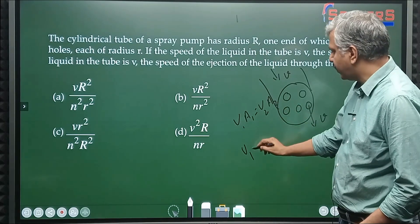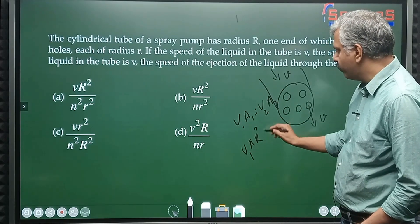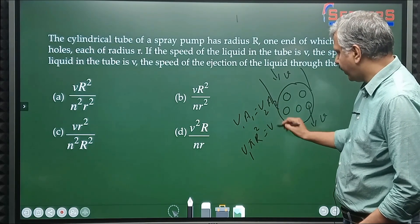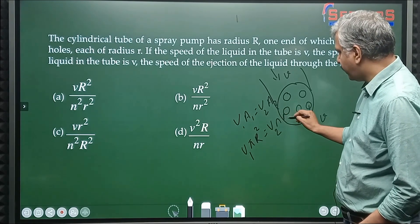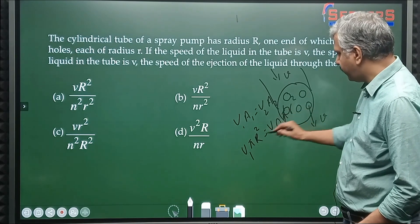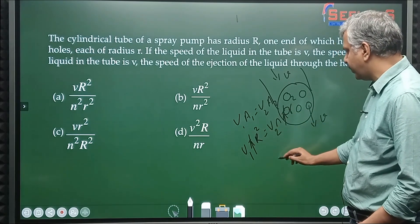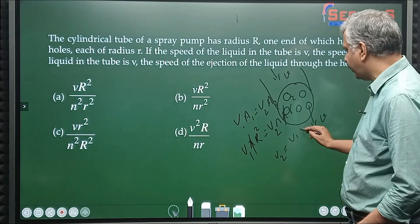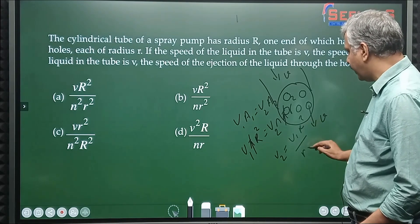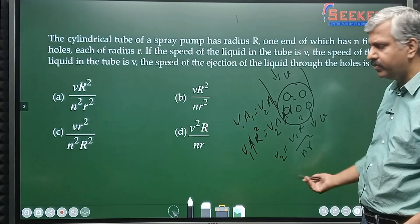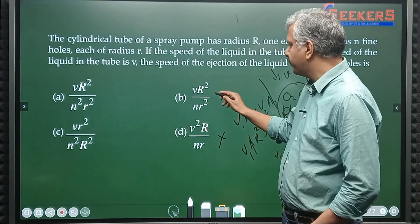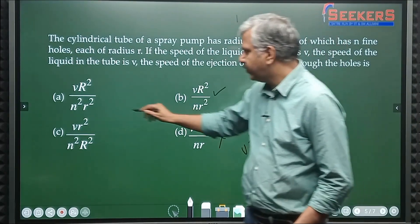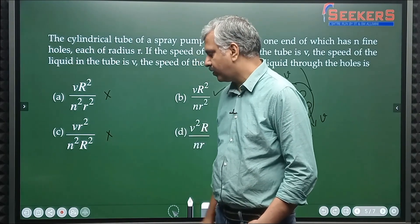Equation of continuity is v1 a1 equals v2 a2. v1 is known, a1 is π R², v2 we have to find out, a2 will be number of holes n times π r². So π π will get cancelled and I will see that v2 will be equal to v1 capital R² by n into small r². So this is going to be the answer. Obviously this cannot be the answer, this is the answer, this cannot be the answer, this is also not the answer.